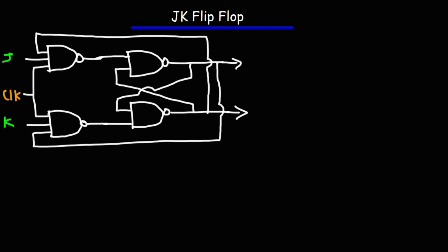So that's how you draw the circuit for the JK flip-flop. Let's call the output of the first NAND gate S and we'll call this R. And the final output we'll call Q and the other one Q-bar.